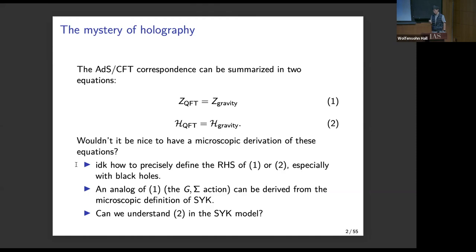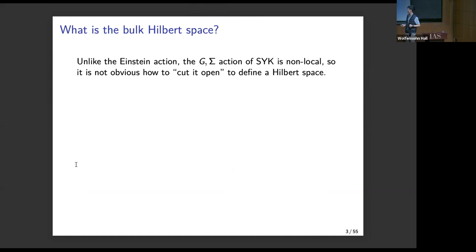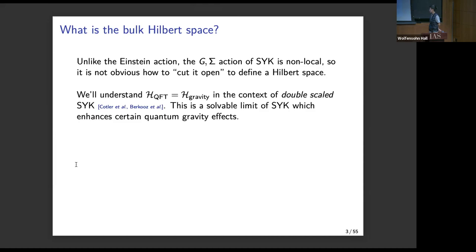One immediate idea is that you might think: let me just cut open the G-sigma action and use the path integral to define states, similar to how I would do it in a field theory. But this immediately runs into a problem — G and sigma are non-local, so this immediately fails. But there's a different limit of SYK called the double-scaled limit, analyzed by Berkooz and company, who developed a new technique using so-called chord diagrams. Using these chord diagrams, we'll be able to make some progress in understanding the second equation.